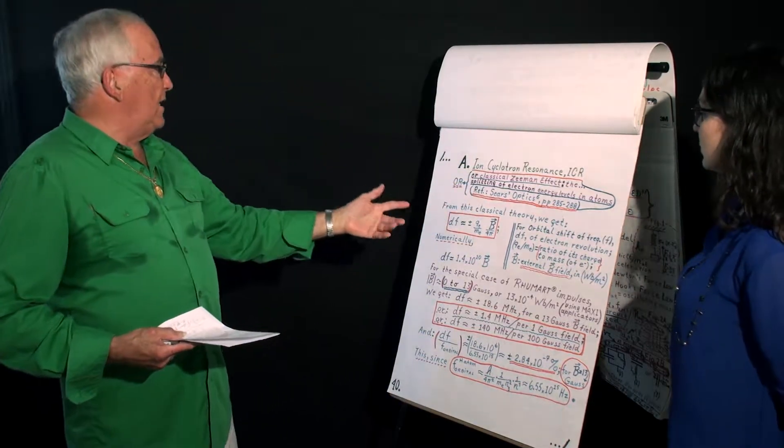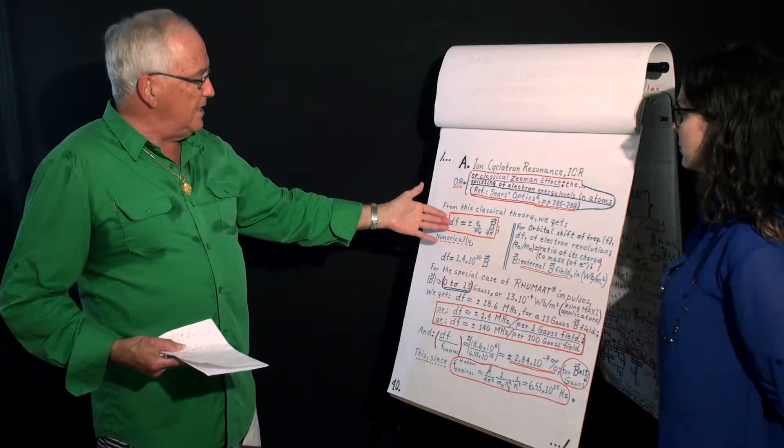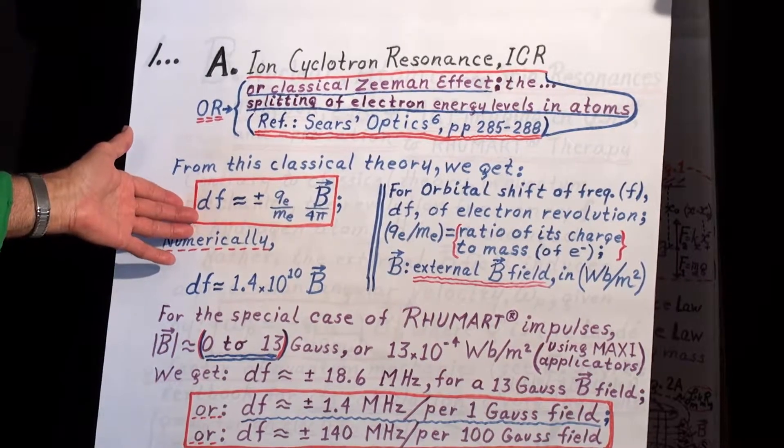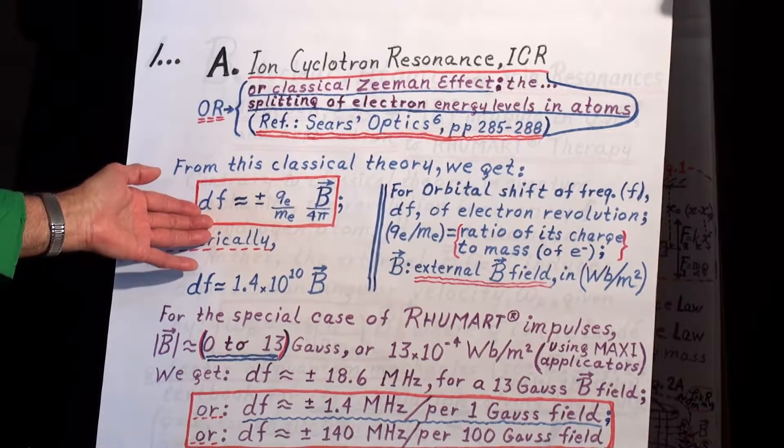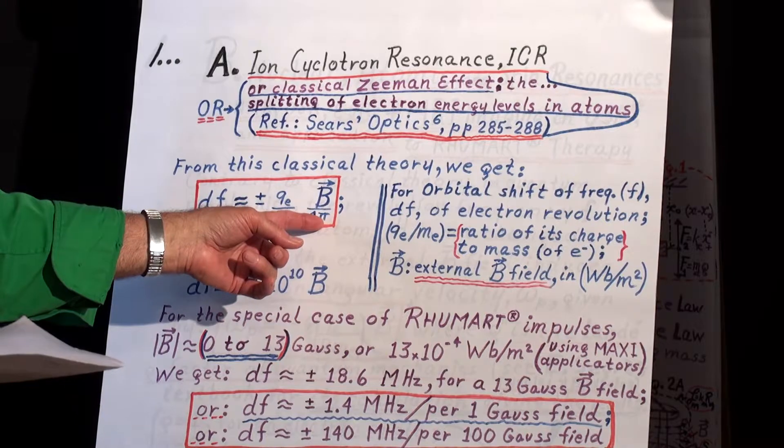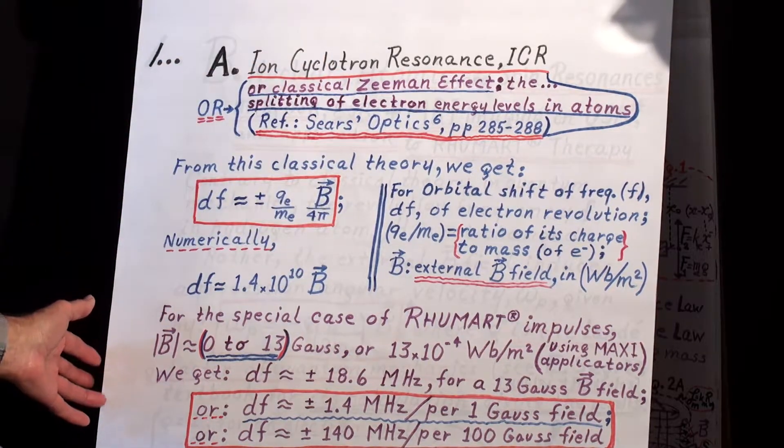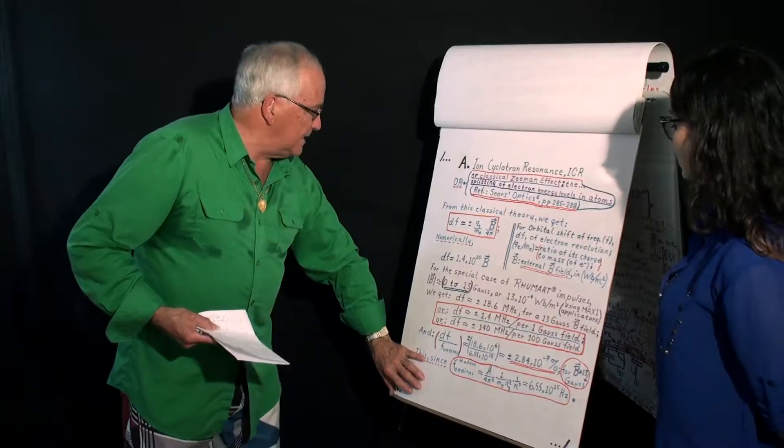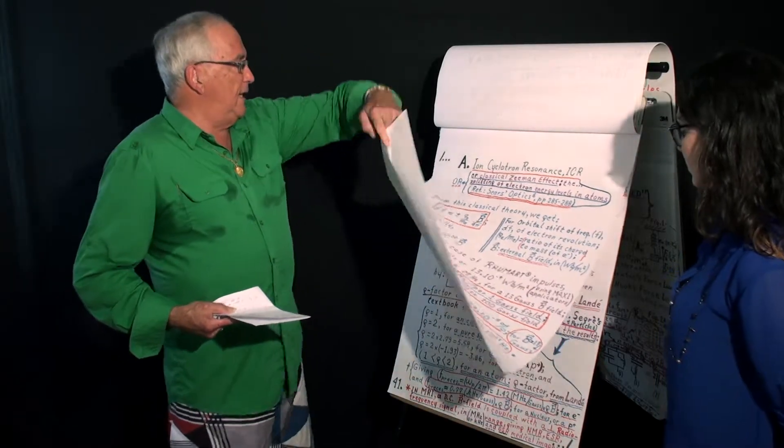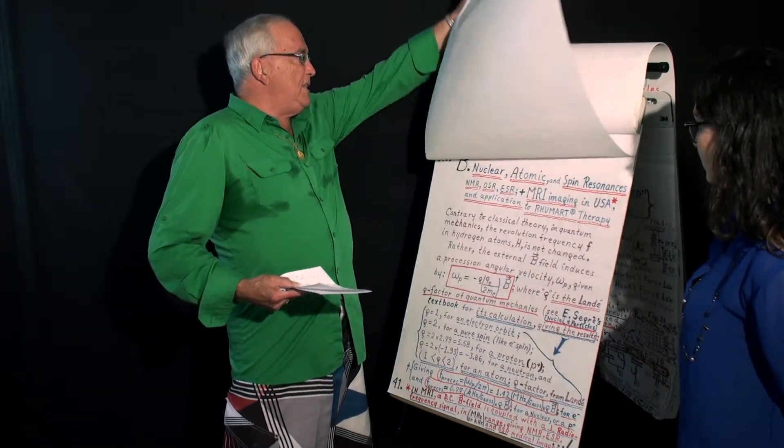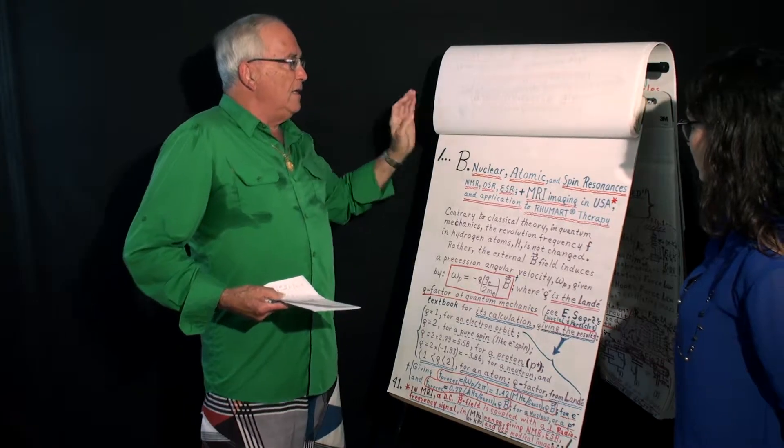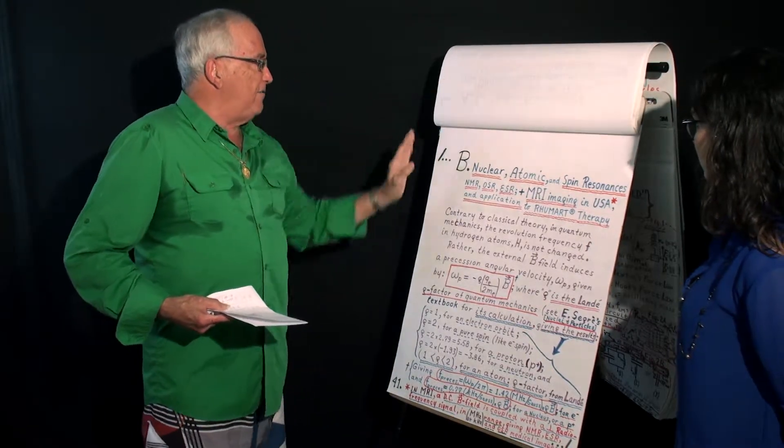Ion-cyclotron resonance, this is just giving a simple equation, classical change of frequency when an atom is in a magnetic field. Okay? So I won't go into all details of that, but this is classical theory of effect of magnetic field on atom.